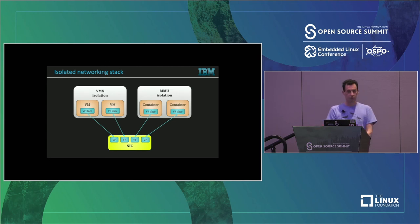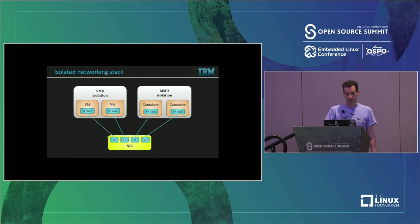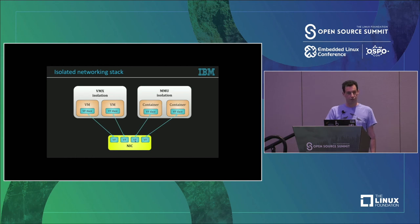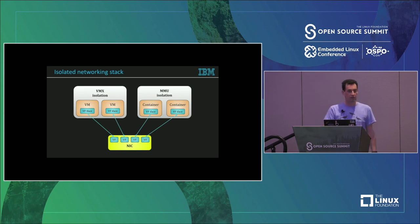This is the vision of where we would like to get after all this work. Today there is VMX isolation for virtual machines — you can assign a virtual function to a VM and this creates an isolated networking stack for it. What we are trying to achieve with MMU isolation and restricted kernel address spaces is the creation of very similar network isolation for containers, so that a virtual function can be assigned to a container and the entire networking stack of that container will run in a different address space than the system default. MMU will guarantee that no other containers can access data passing through that networking stack.